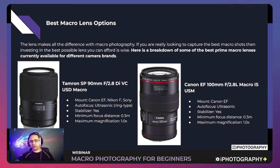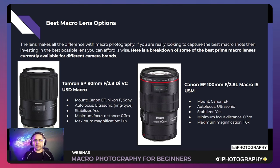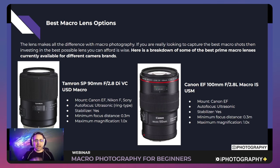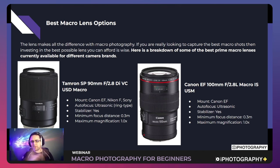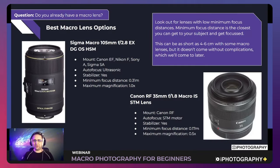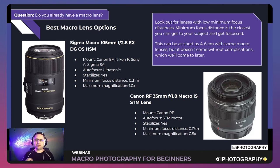For each lens listed I've included: the model, what camera mount it's available for, the type of autofocus system, whether it has image stabilization, the minimum focus distance (MFD), and the magnification ratio. If you see '1x' or '1.0', that means one-to-one. A low MFD — how close you can physically get to your subject while still achieving focus — can make a real difference.